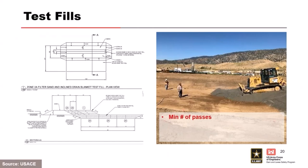For evaluation of particle breakdown, Isabella took gradations from the stockpile before they started, then after two passes with a 10-ton roller, after four passes, after six passes, and compared those gradations to see how much it was breaking down for each roller pass - all during the test fill. The contractor specifications state they have to use what is proposed for equipment on the test fill. If partway through construction they decided to change equipment, they'd have to do another test fill to verify they can meet the in-place requirements of the material being placed.